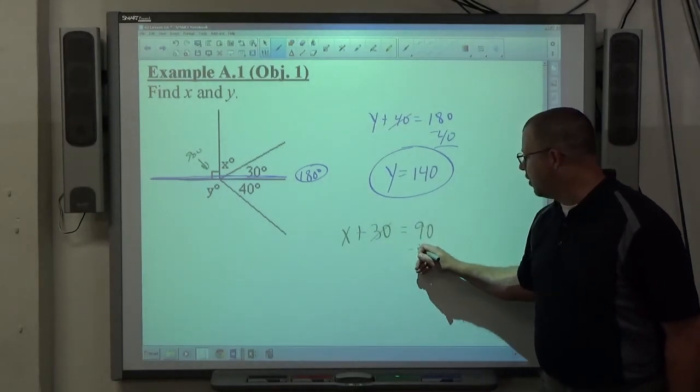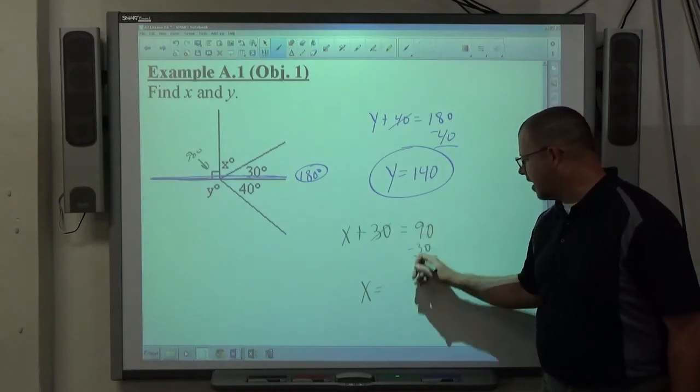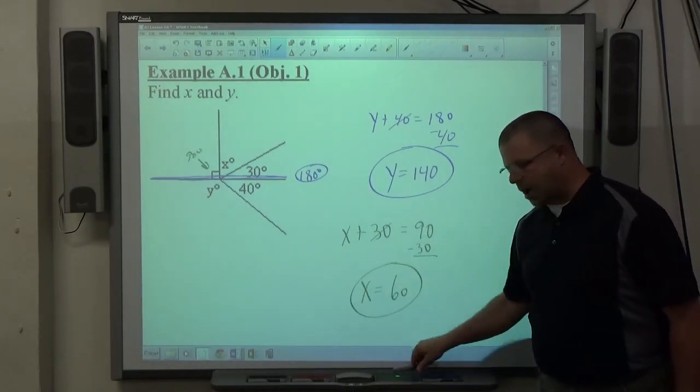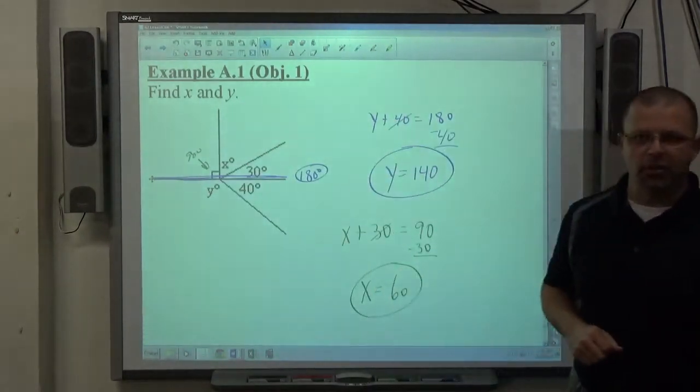And again, solving the equation using good solving technique. Move the 30 over, change the sign. 90 minus 30 is equal to 60. Just like that, we figure out the values of x and y, which is what it told us to do. So when we answer the question, we're done.